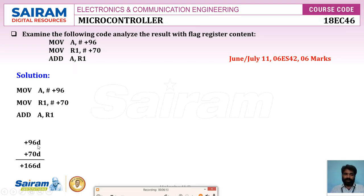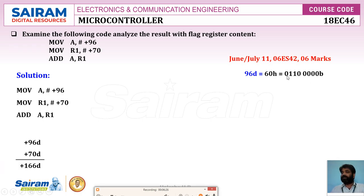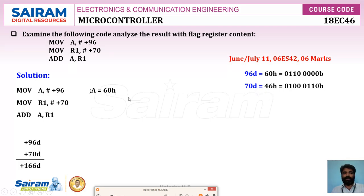We are expecting the result 96 + 70 = 166. Now, 96 in hexadecimal is 60h — in binary it is 01100000. After executing the first instruction, A = 60h. Similarly, 70 in hexadecimal is 46h, so after executing the second instruction, R1 = 46h.